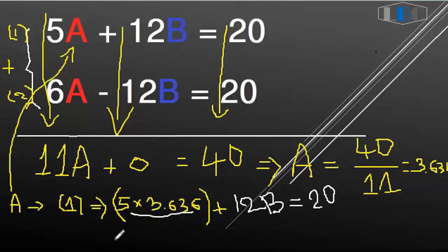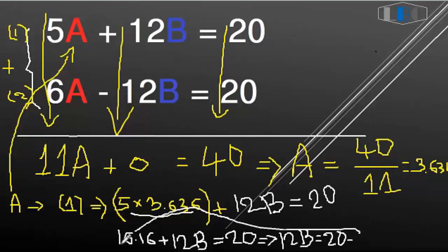Equals 16.16 plus 12B equals 20. So 12B equals 20 minus 16.16.